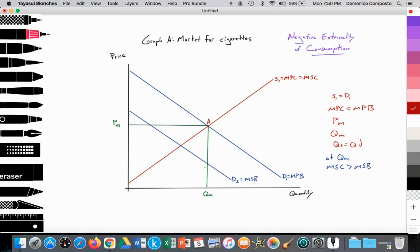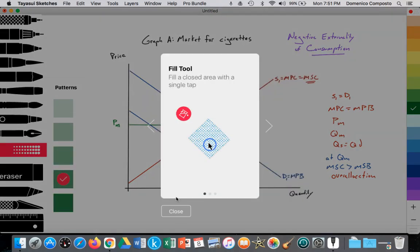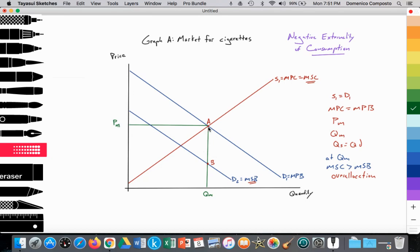Here's point B. Point A is the marginal social cost greater than the marginal social benefit, meaning that there is an over-allocation of resources to the production and consumption of cigarettes. And society would like less. And that welfare loss is represented by this triangular area here. Okay. So here we see the welfare loss.